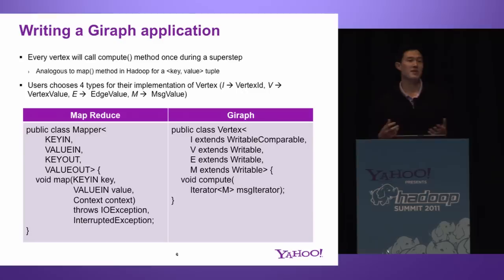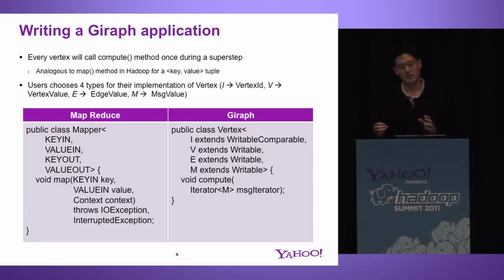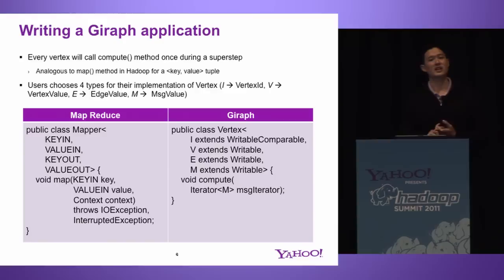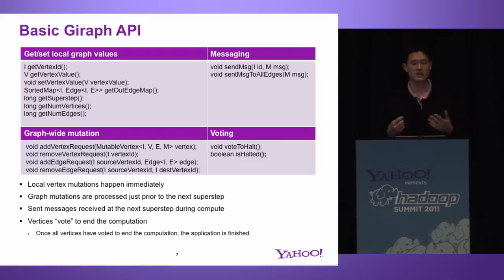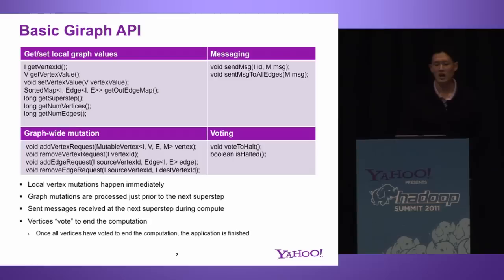How do you write a Giraffe application? It's very similar to writing a MapReduce application. The map method in Hadoop works on a key-value tuple, and in Giraffe you have a compute method that works on your vertex. You get a message iterator as part of your API call, which lets you iterate over the messages sent from the previous super step. In our implementation, you pick four different types: the vertex ID, the vertex value, the edge value, and the message value. The API allows you to do local mutations — get or set data locally, get your ID, get or set your vertex value, get a list of outward edges, check what super step you're on — and those changes happen immediately and are available to that vertex.